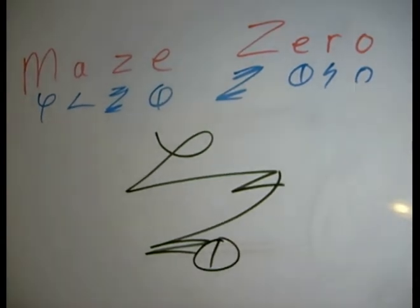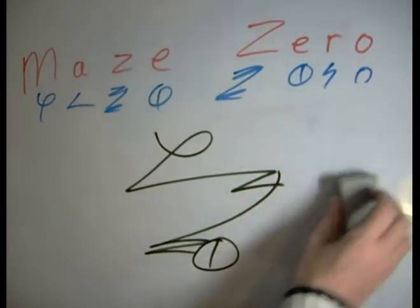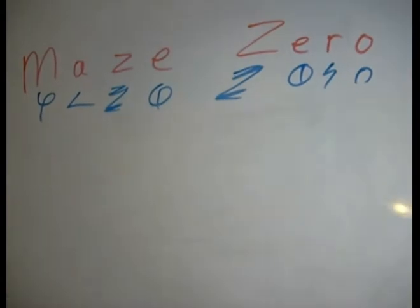We would then add an E, and there we go. Now, there's not a lot of extra combinations we can do with this. Maze is a very standard word, and it doesn't present a lot of possibilities. So, we'll stick with that for now, and we'll move on to zero.